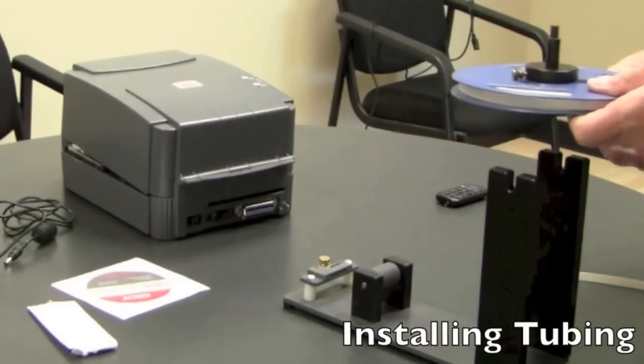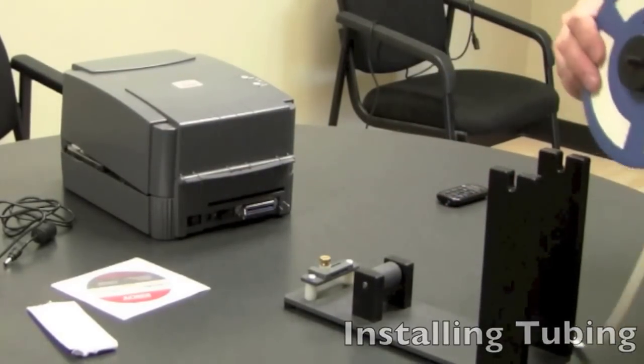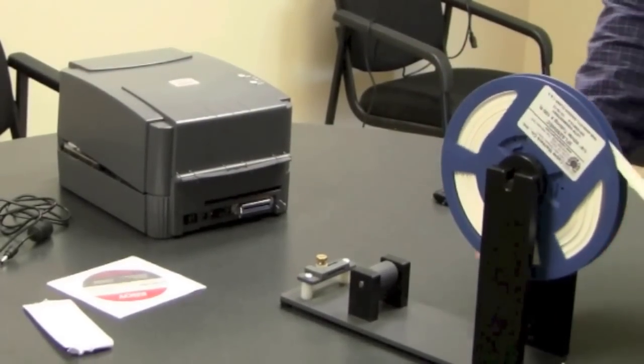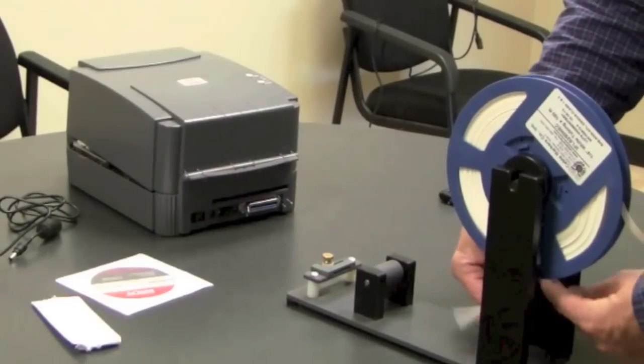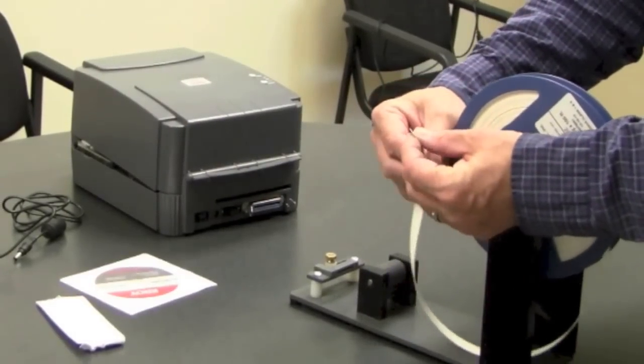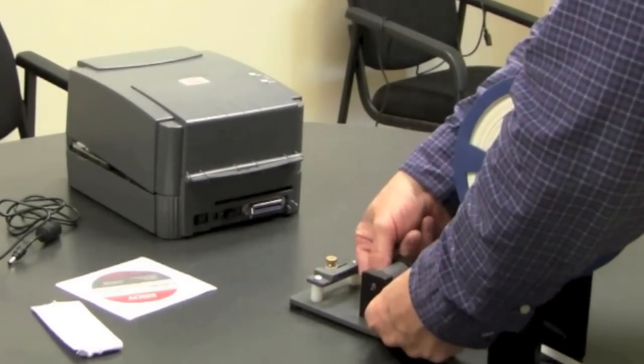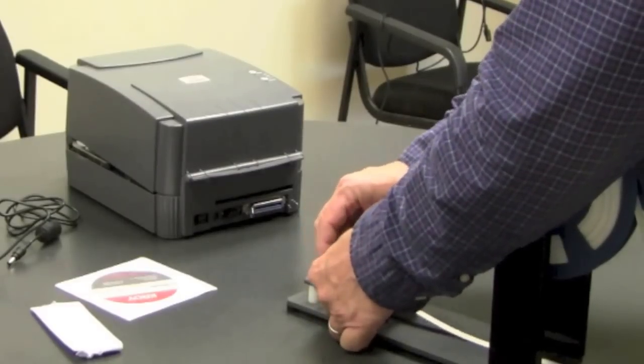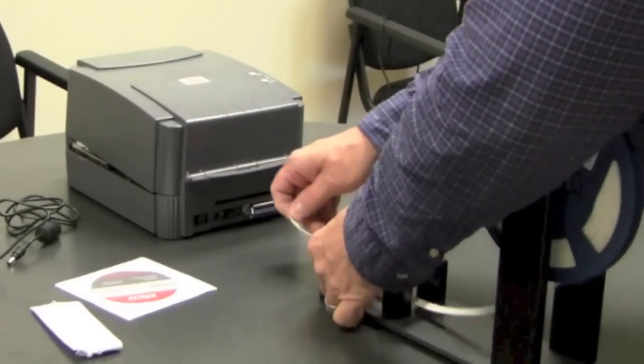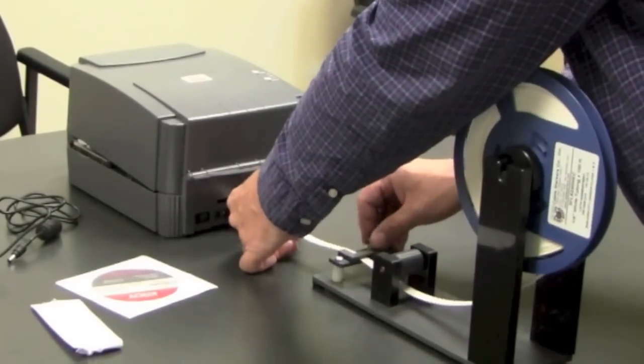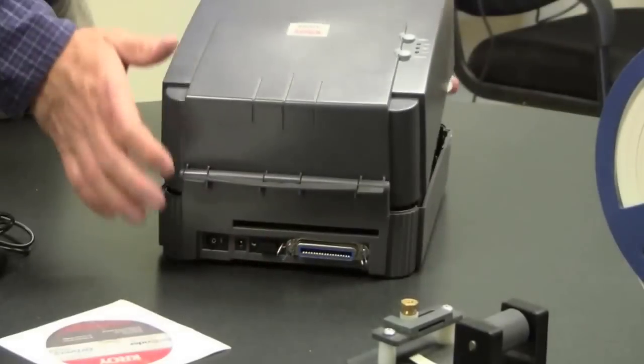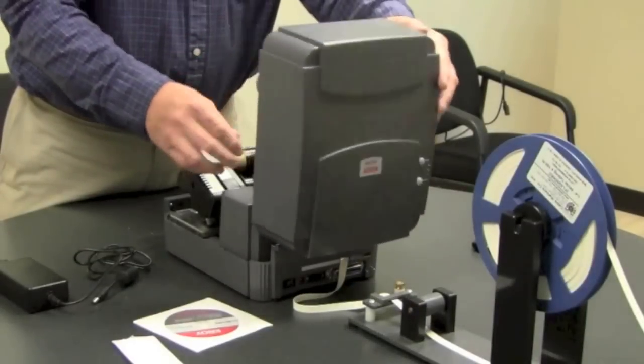You then want to install the tubing on the external spooler. Guide the tubing through the back of the printer, through the opening slot in the back side.